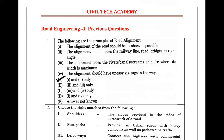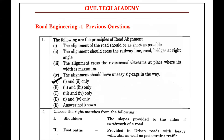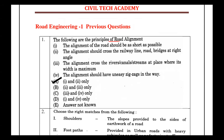Let's look at the first question about the principles of road alignment. Road alignment refers to how we fix the center line of the road — the process of determining where the center line should be placed and how the road alignment is carried out.